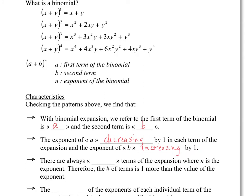For the number of terms: to the power of 1 there are 2 terms; to the power of 2, binomial squared gives a trinomial, so 3 terms; to the power of 3 gives 4 terms. So there are always n plus 1 terms in the expansion, since the exponent is n.